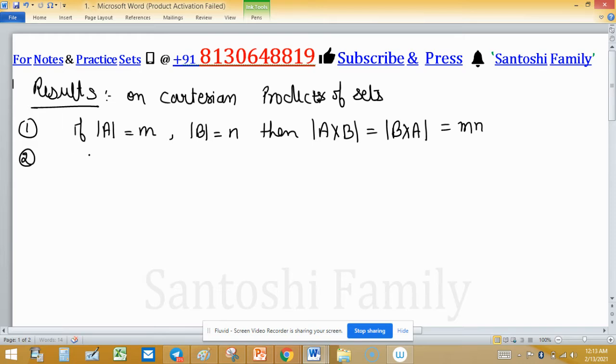Second result is: A cross B equal to B cross A if and only if A equal to B, and A, B are non-empty.